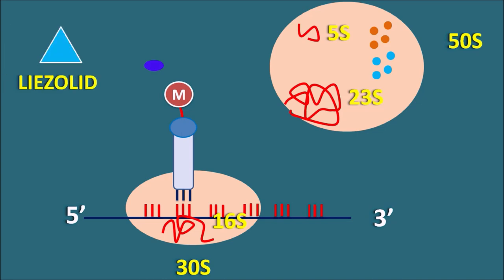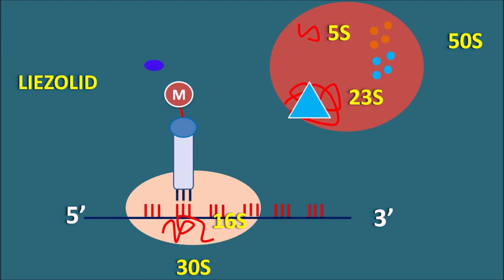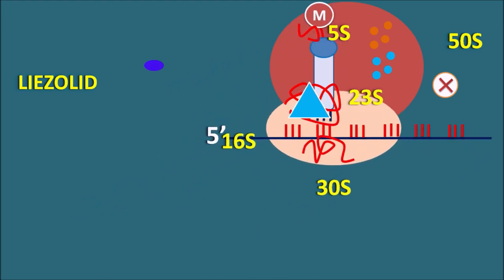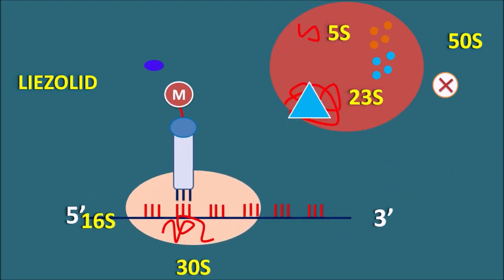Linezolid inhibits the formation of the initiation complex by binding to the 23S rRNA present on the 50S subunit. Once it binds to this rRNA, it inhibits the activity of the 50S subunit, preventing the 30S subunit from forming a complex with it. Thereby, the 70S initiation complex cannot be produced, and bacterial protein synthesis is inhibited.